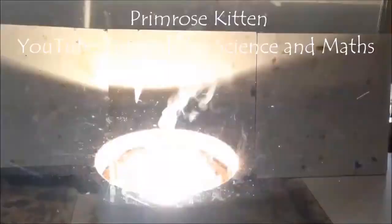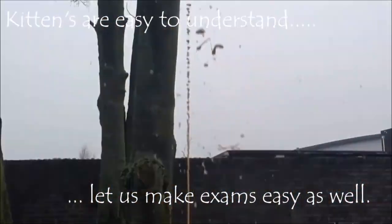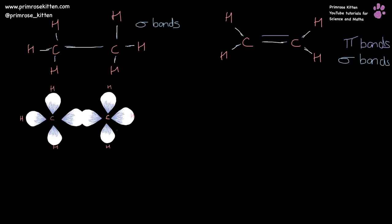In addition to sigma bonds, we also have pi bonds. Here I go through the chemistry behind them and what impact they have on everything around them. In the last video, we looked at the hybridization of the S and the P orbitals to make sigma bonds or single bonds. In this video, we are going to be looking at pi bonds, which is the other bond in a double bond. We have a sigma bond, and we have a pi bond.